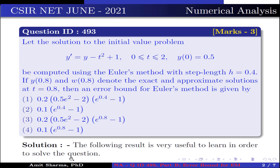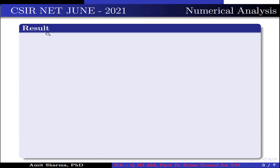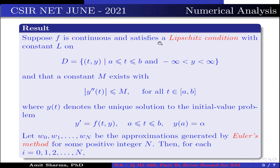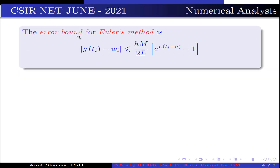The following result is very useful to solve this question. Suppose f is continuous and satisfies the Lipschitz condition with constant L on {(t, y) : a ≤ t ≤ b, −∞ < y < ∞}, and a constant M exists with |y''(t)| ≤ M for all t ∈ [a, b], where y(t) denotes the unique solution to y' = f(t, y), a ≤ t ≤ b, y(a) = α. Let w₀, w₁, …, wₙ be the approximations generated by Euler's method. Then for each i = 0, 1, 2, …, n, the error bound is |y(tᵢ) − wᵢ| ≤ (hM)/(2L) × (e^(L(tᵢ − a)) − 1).